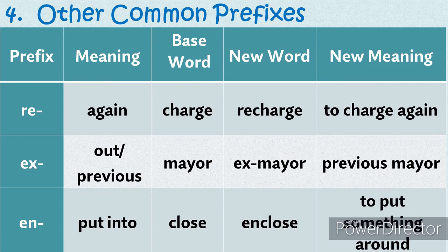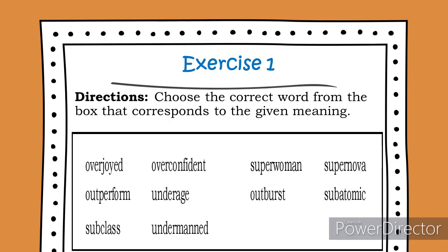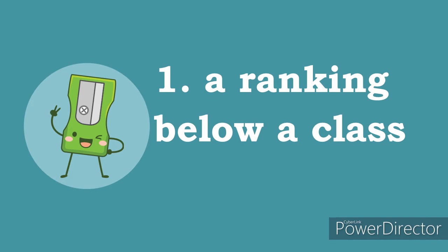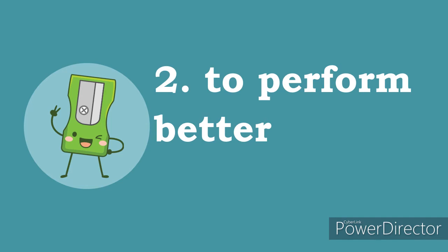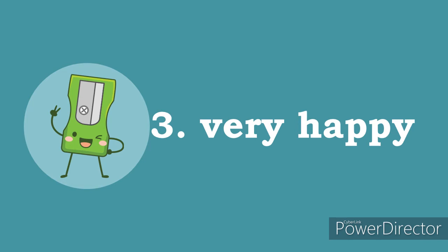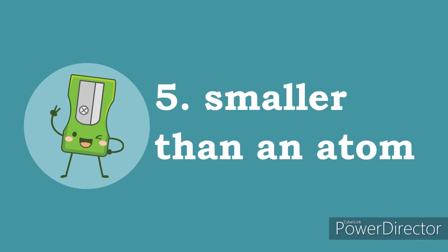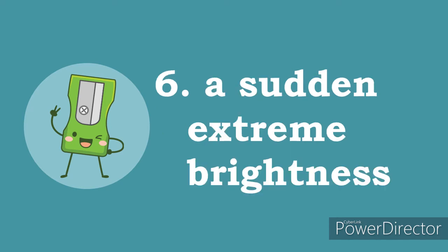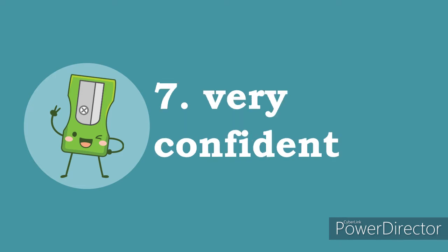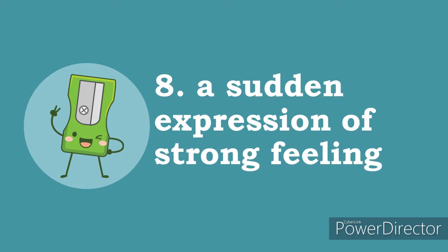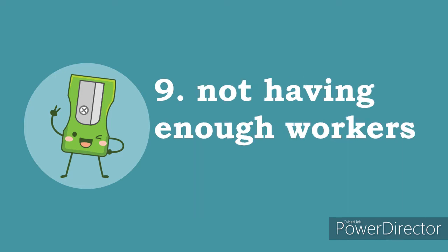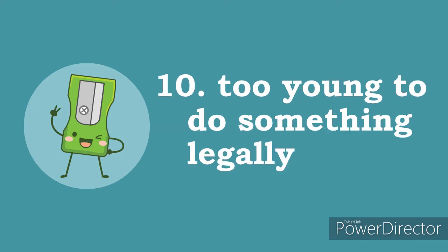To check if you remember the prefixes discussed, do the following exercises. Exercise one: choose the correct word from the box that corresponds to the given meaning. Number 1: a ranking below a class. Number 2: to perform better. Number 3: very happy. Number 4: a very strong woman. Number 5: smaller than an atom. Number 6: a sudden extreme brightness. Number 7: very confident. Number 8: a sudden expression of a strong feeling. Number 9: not having enough workers. Number 10: too young to do something legally.